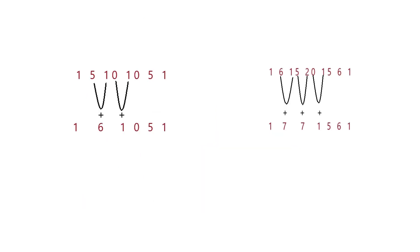For example, to obtain 11^5, we take the first entry of the 5th row, which is 1. Then we take the sum of the next 2 digits, that is 5 + 1, which equals 6. Again, we take the sum of the next 2 digits, that is 0 + 1, which equals 1. And the rest of the digits are taken as they are in that order, that is 0, 5, 1. Thus, we obtain 11^5 = 161051. This pattern is illustrated here. Similarly, 11^6 is obtained from the 6th row in the same manner. The rest of the powers of 11 are obtained by following this pattern.